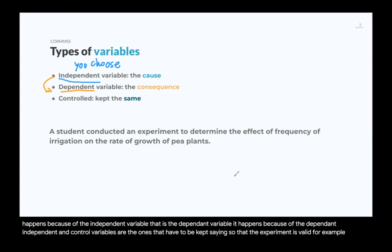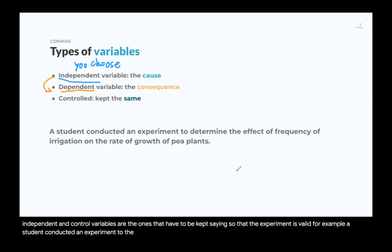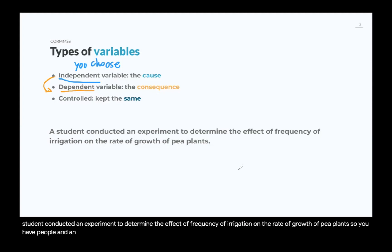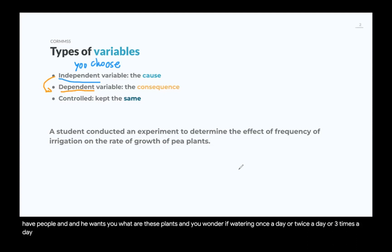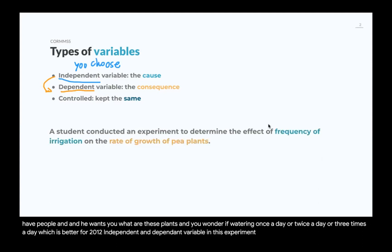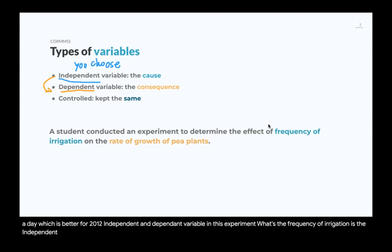For example, a student conducted an experiment to determine the effect of frequency of irrigation on the rate of growth of pea plants. You have pea plants and you want to water them, wondering if watering once, twice, or three times a day is better for plant growth. The frequency of irrigation is the independent variable — it's the thing you choose.